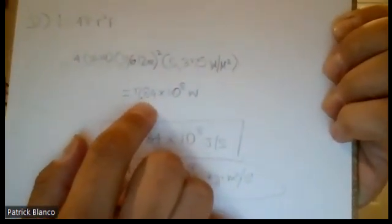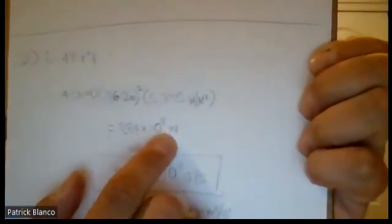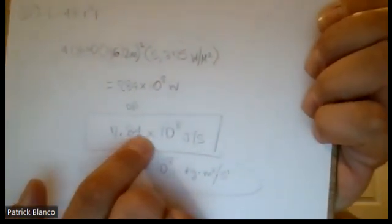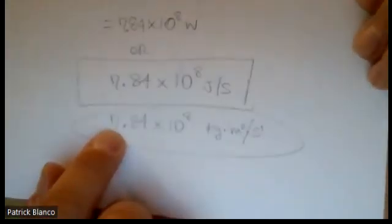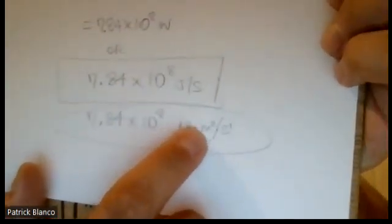I got 7.84 times 10 to the 8th power watts, or converted to joules per second, 7.84 times 10 to the 8th power joules per second, which is actually 7.84 times 10 to the 8th power kilograms per meter squared per second, which is a joule per second, from my understanding.